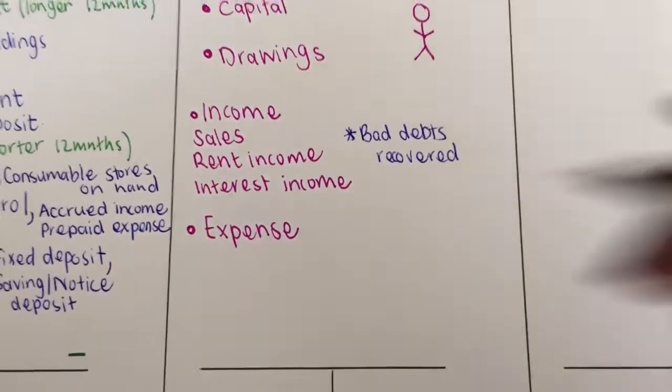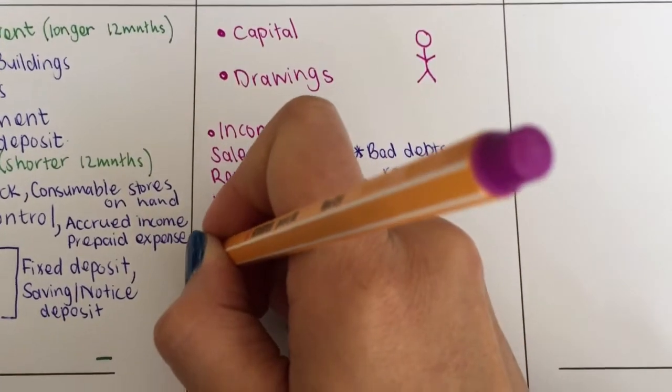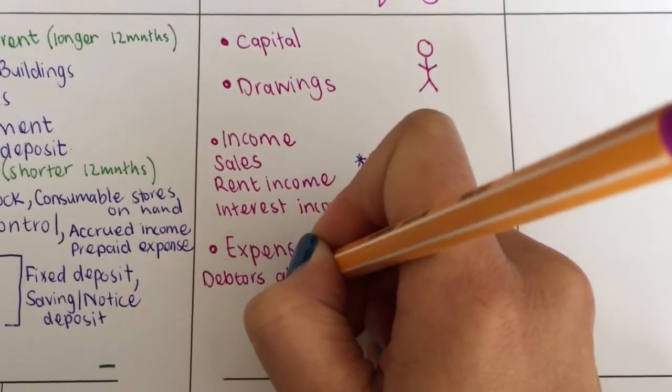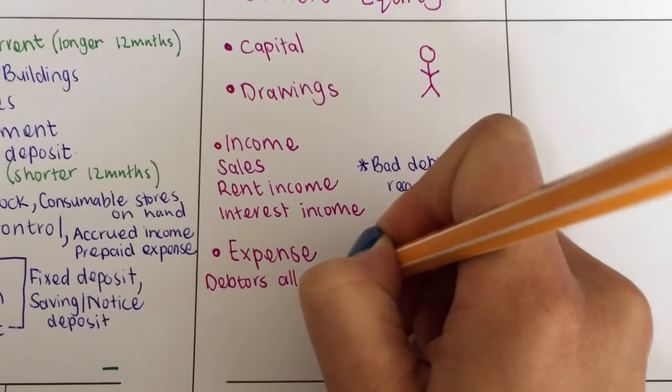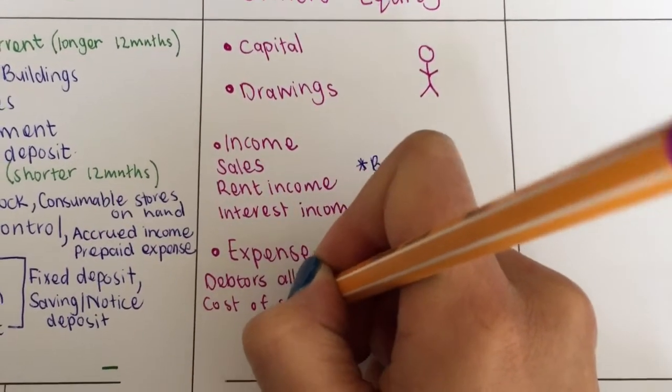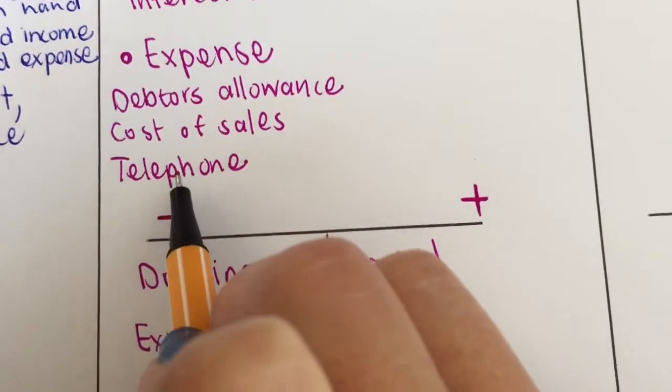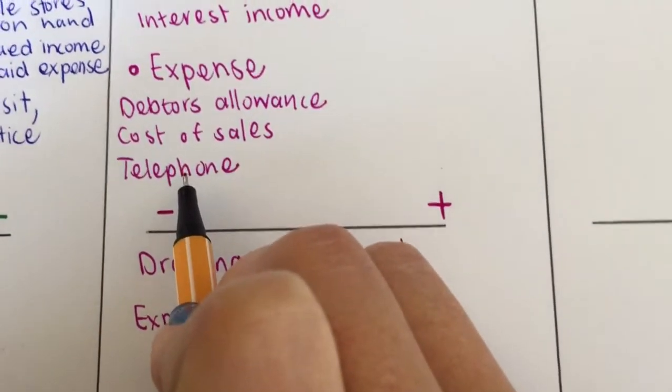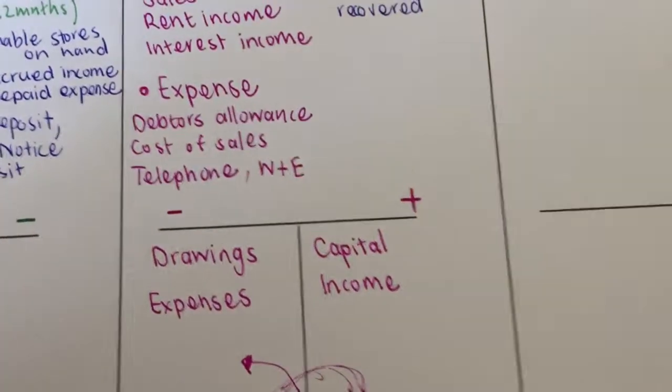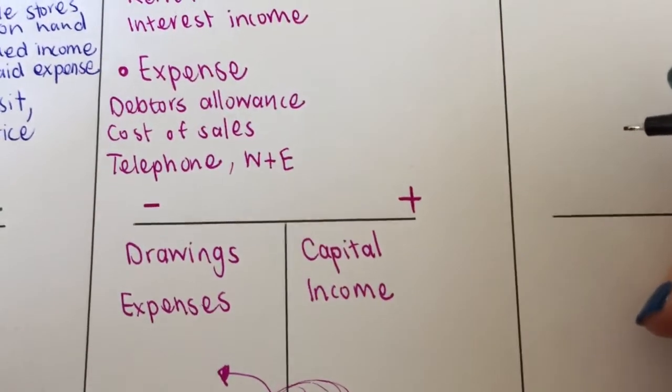Then under my expenses, there's a whole list. You need to be aware that debtors allowance is an expense, cost of sales. Then you get a whole bunch of other expenses such as telephone, we've got water and electricity, and then you're going to learn some new ones now as well.